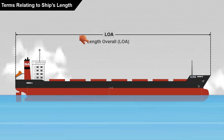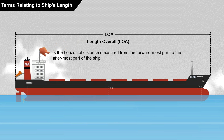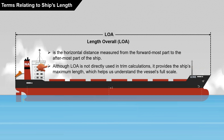First, let's start with length overall, or LOA. This is the horizontal distance measured from the forwardmost part to the aftermost part of the ship. Although LOA is not directly used in trim calculations, it provides the ship's maximum length, which helps us understand the vessel's full scale. This measurement is essential when arriving at a harbor, as it determines the required maneuvering room and berth availability.